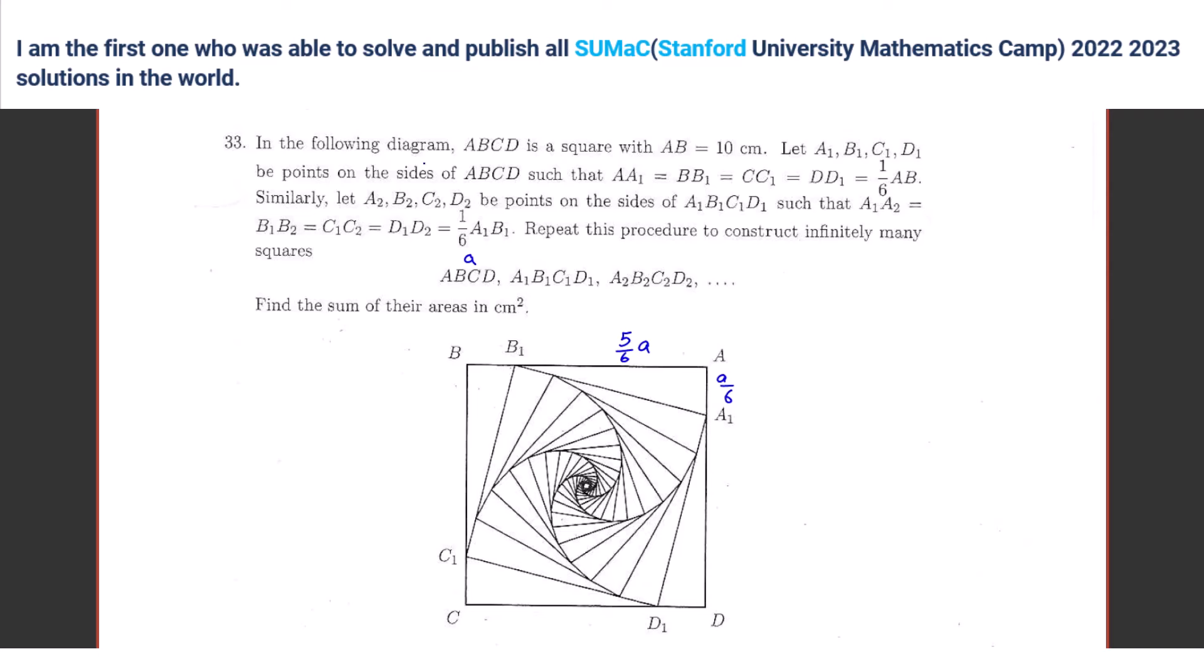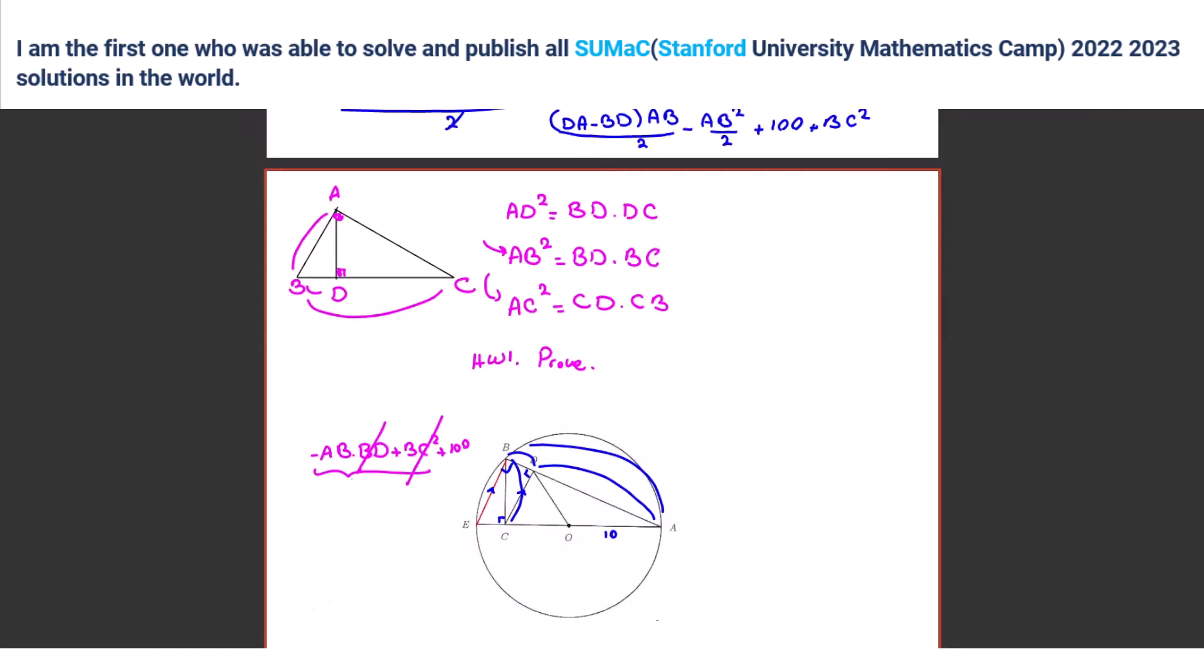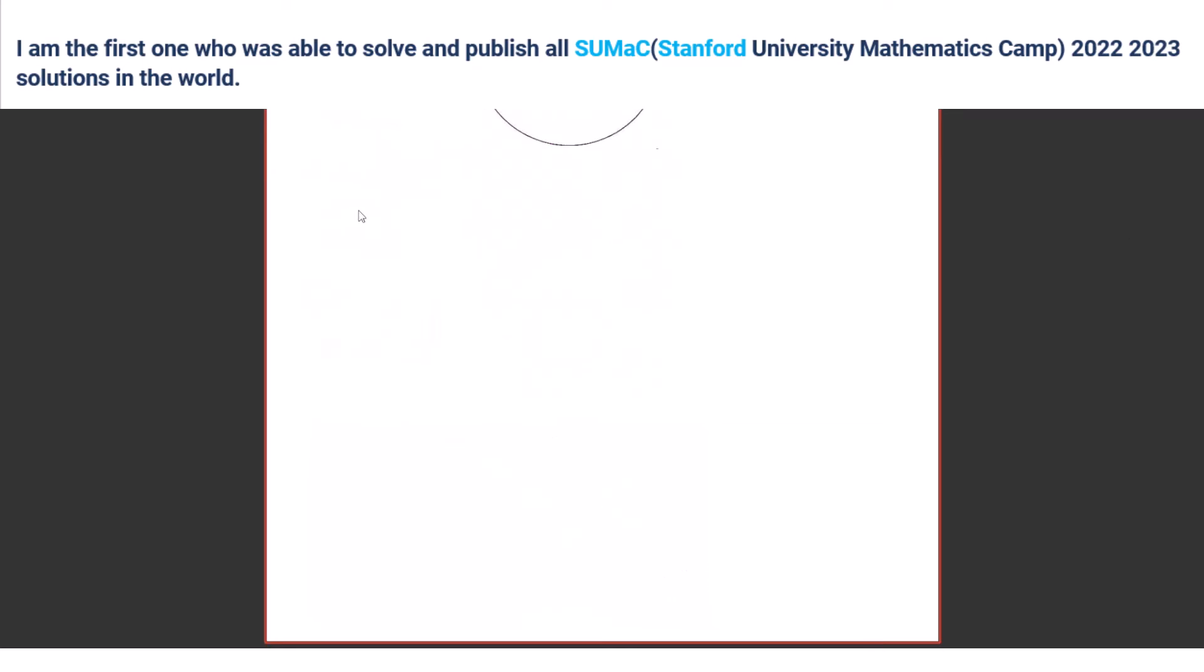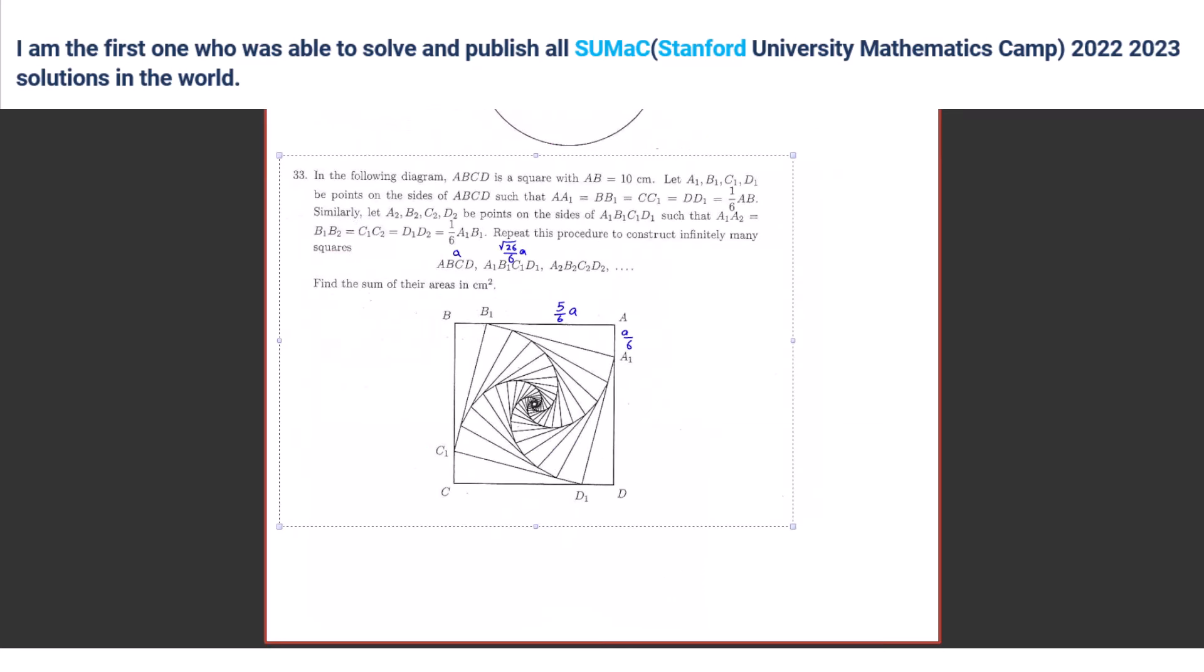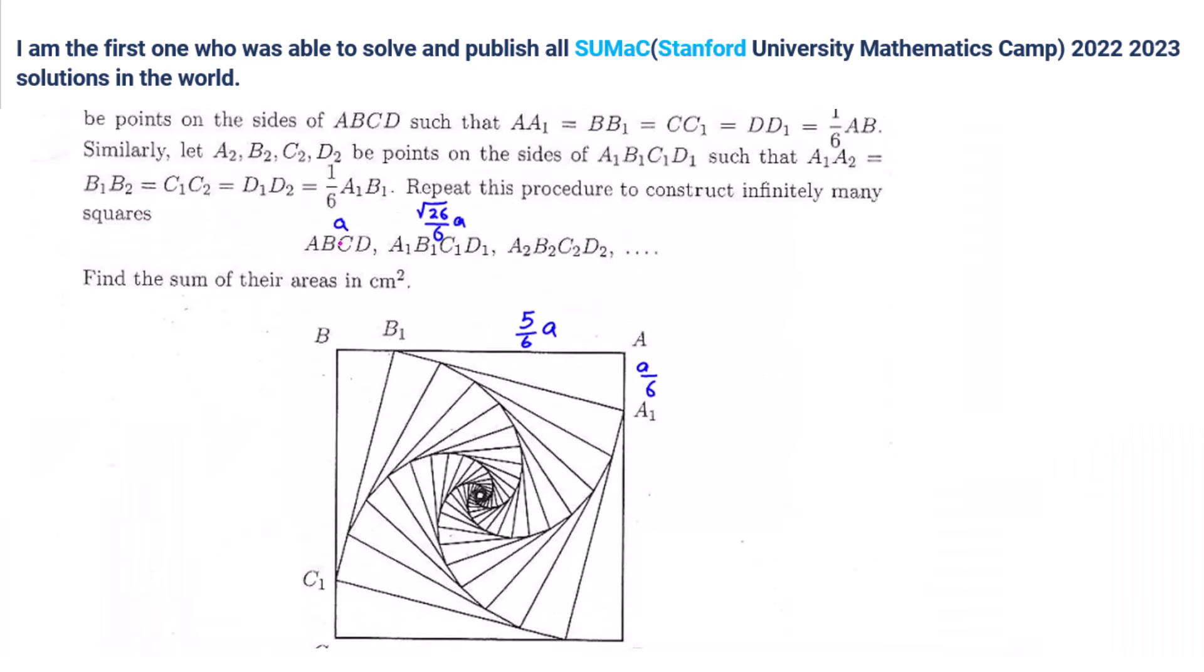A. Yes. So, what's the relationship between areas? Root 26 over 6. Exactly. No, no, no. Area of first one is A squared. Area of this one is what? 26 over 5 to 6. Yes, if you simplify it, it will be 13 over 18 A squared.